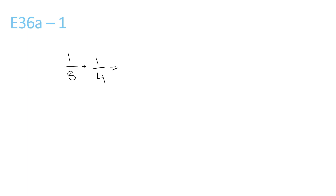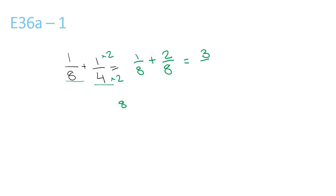To do this question first, you have to find the LCM of 8 and 4, which is 8, because that's the number that they both go into. Then we keep it as 1 over 8, plus 4 times 2 is 8, so we times the top by 2 to get 2 over 8. Now we add 1 plus 2 to get 3 over 8.